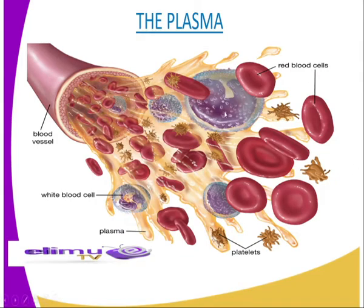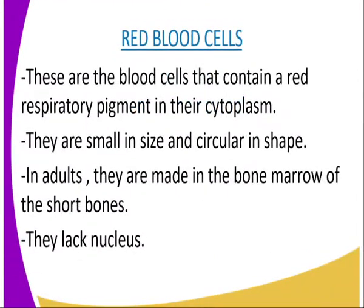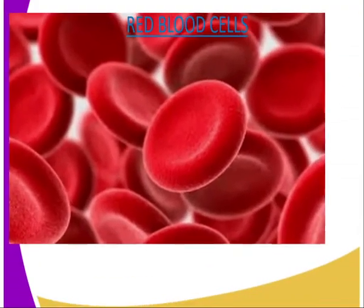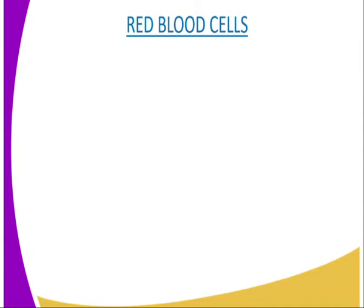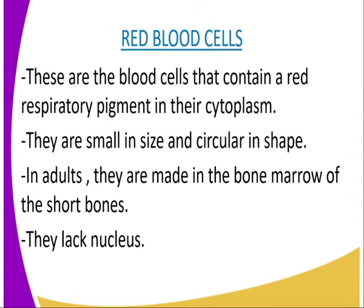We are going now to have our second blood component: the red blood cells. The biological name for the red blood cells is erythrocytes. The red blood cells are the blood cells that contain a red respiratory pigment, as you can see from our diagrammatic representation, in the cytoplasm — hence the name. The cells are small in size and circular in shape. The red blood cells are many in plasma, at about 5 million cells per cubic millimeter of blood.